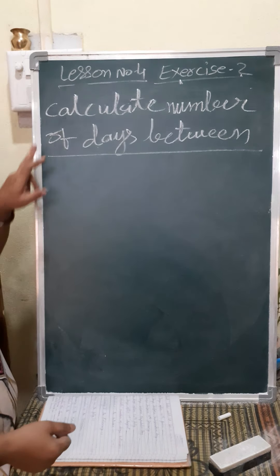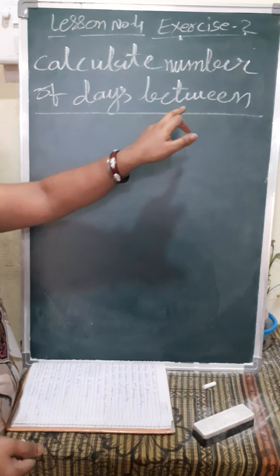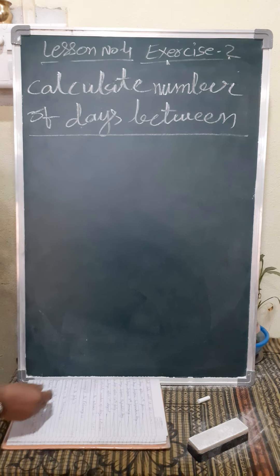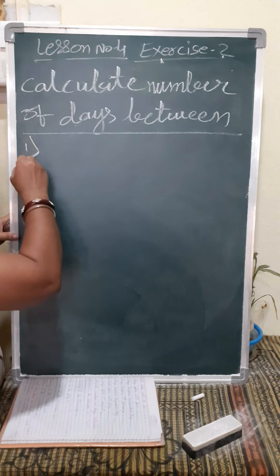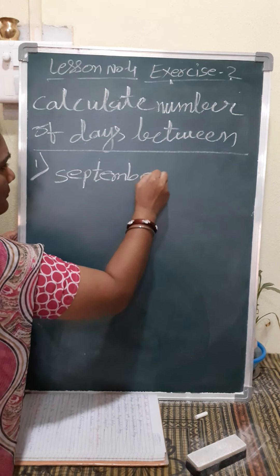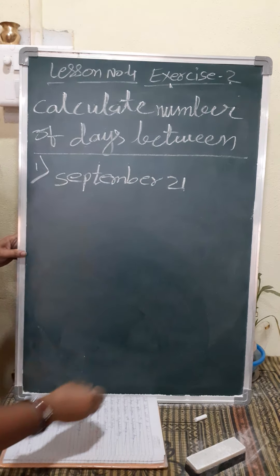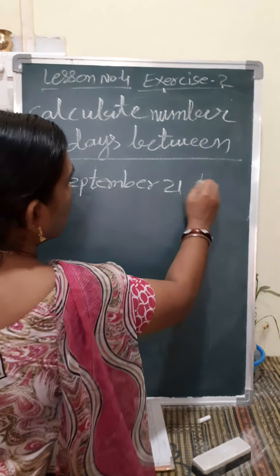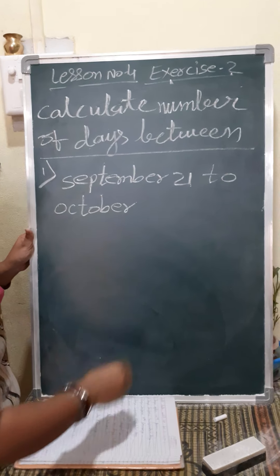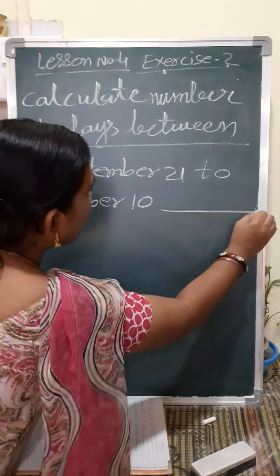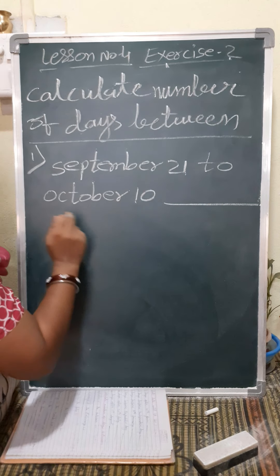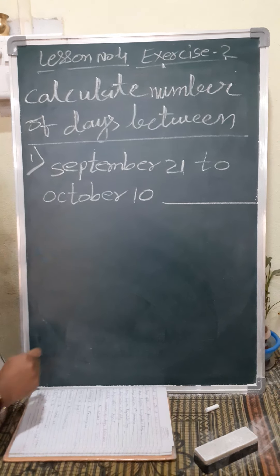Now we will learn to calculate the number of days in between. Means one date will be given, another date, and between them how many days pass — you will learn that. Example: September 21 to October 10 — in between, how many days pass? How we will calculate it?